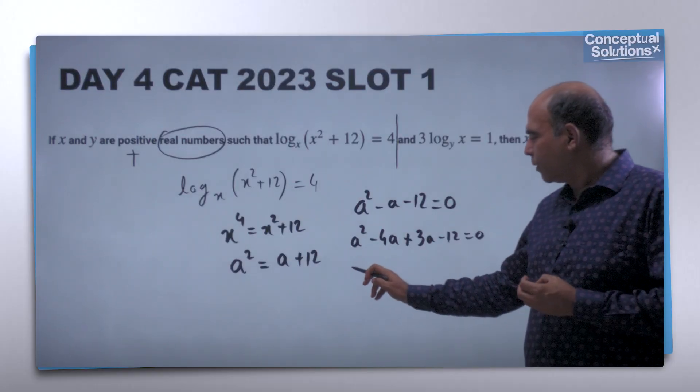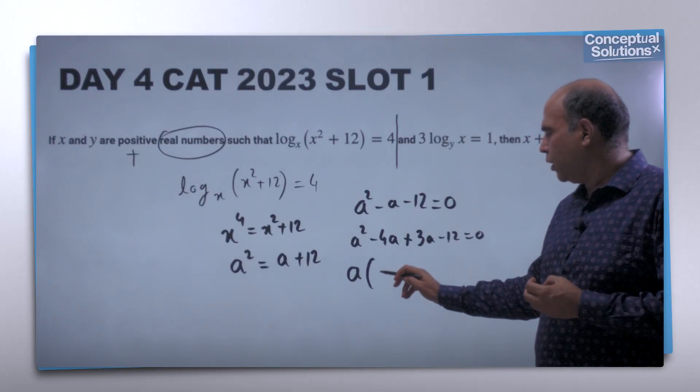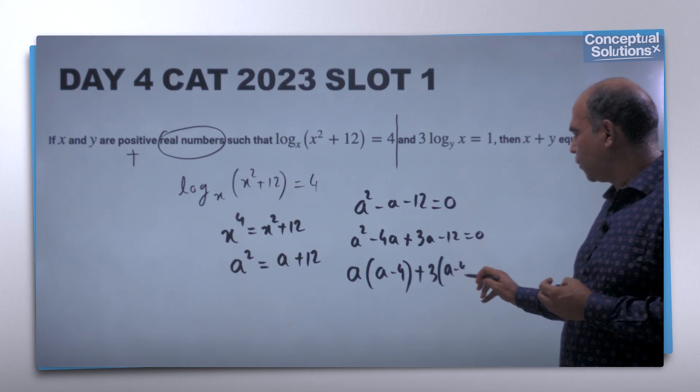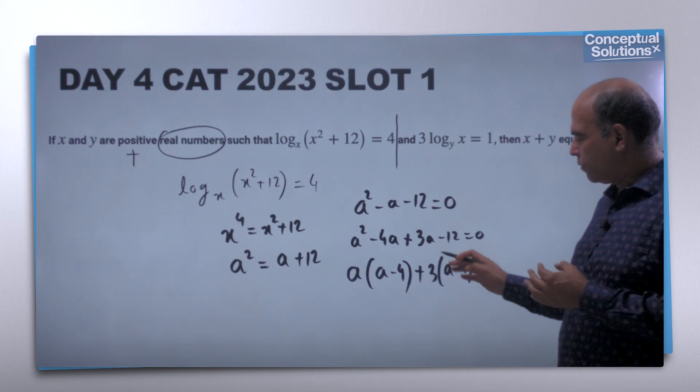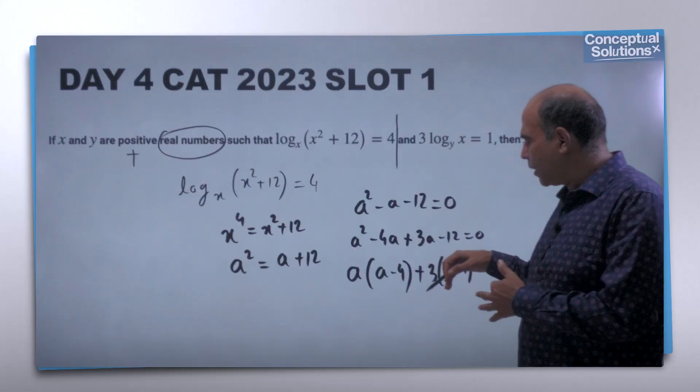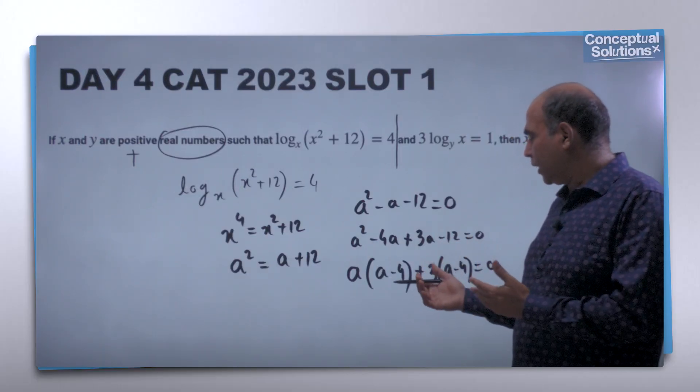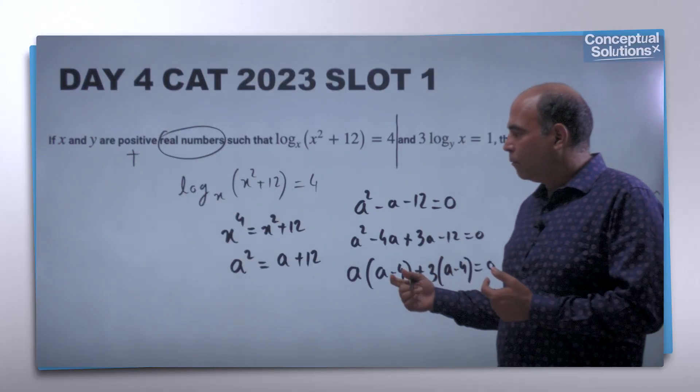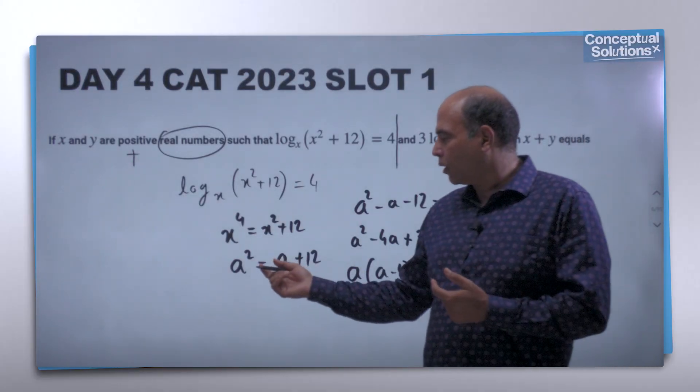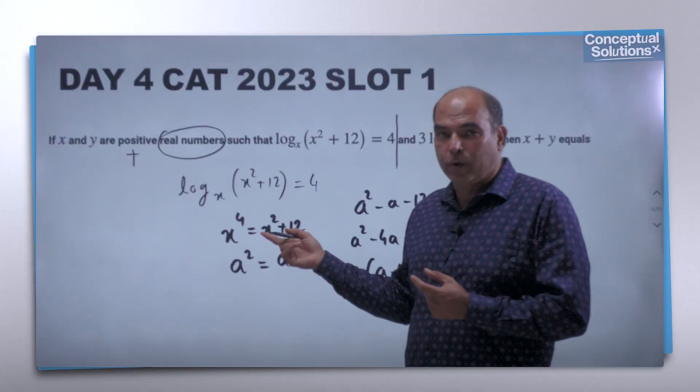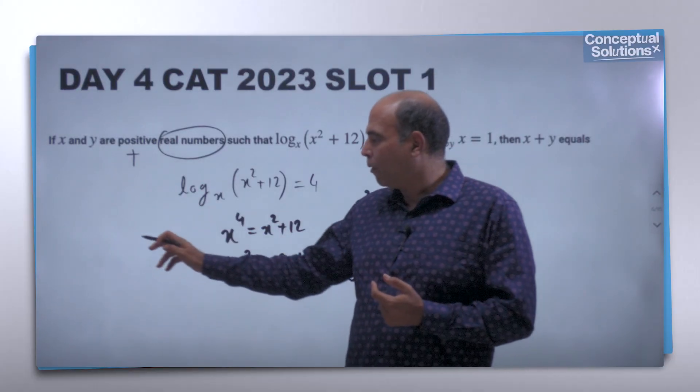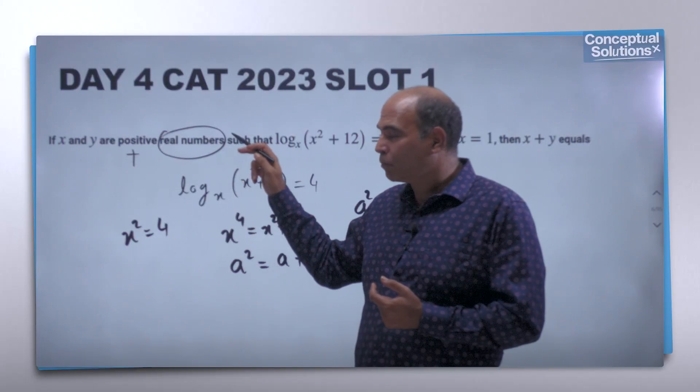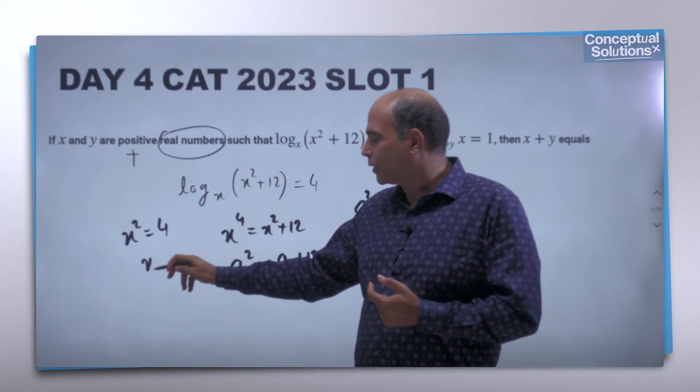That ends up giving you a(a - 4) + 3(a - 4) = 0, which factors as (a + 3)(a - 4) = 0. Then a can be either 4 or -3, but we can rule out -3 because a = x². Hence x² = 4, and since x is positive, x = 2.